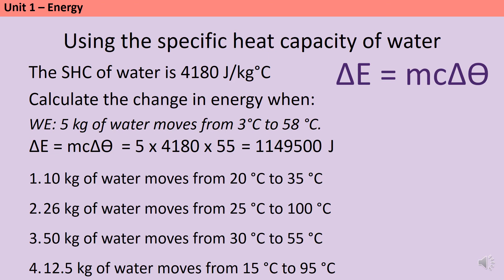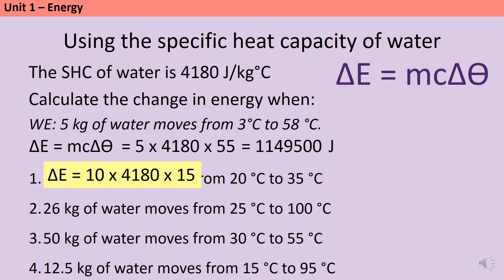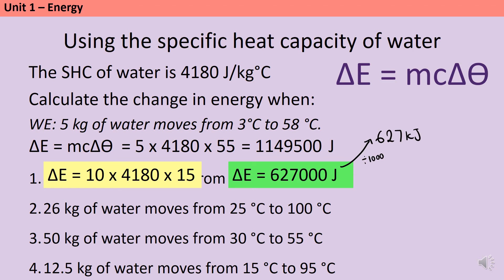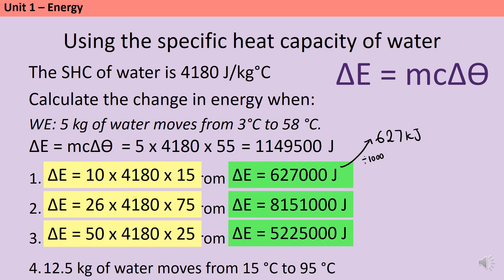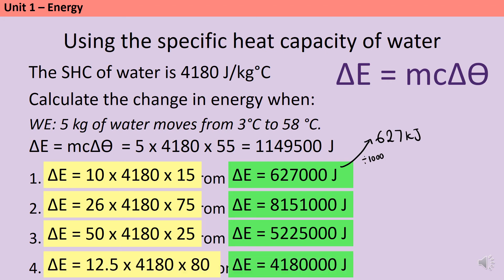Pause the video now and have a go at the other four questions on your own. For each one the specific heat capacity is always 4,180 because we're always looking at water. For question one: 10 × 4,180 × 15 gives 627,000 joules — or 627 kilojoules if the exam asks for kilojoules, just divide by 1,000. For question two: 26 kilograms with a temperature change of 75 degrees gives 8,151,000 joules. For question three: 5,225,000 joules. And for the final question: 4,180,000 joules.